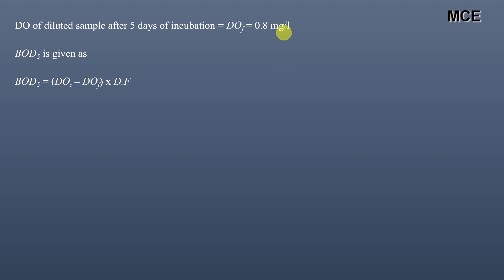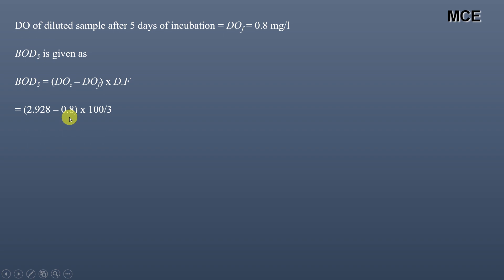BOD5 is given as: DO_initial minus DO_final, multiplied by the dilution factor. DO initial is 2.928, DO final is 0.8, and the dilution factor is 100 divided by 3. So BOD5 at 20 degrees centigrade equals 70.9 mg per litre.